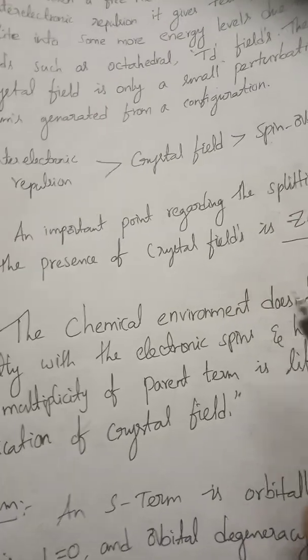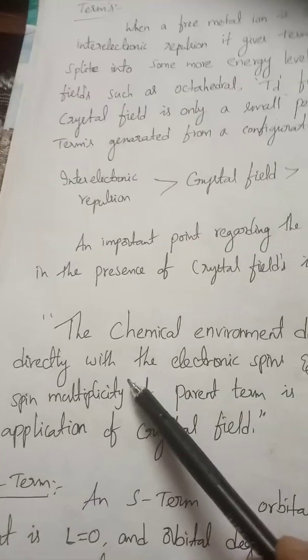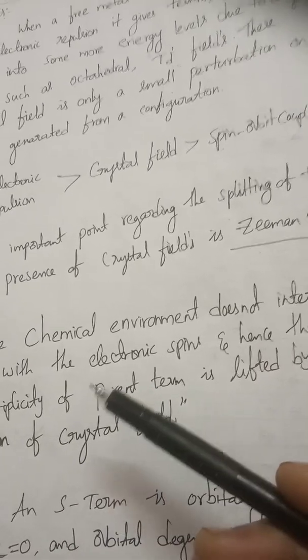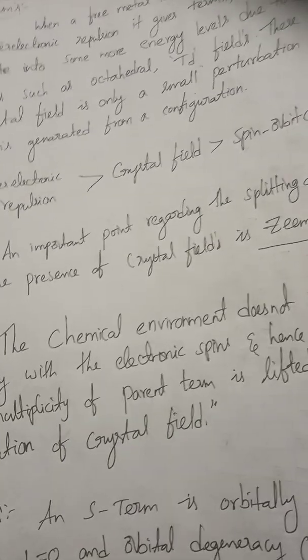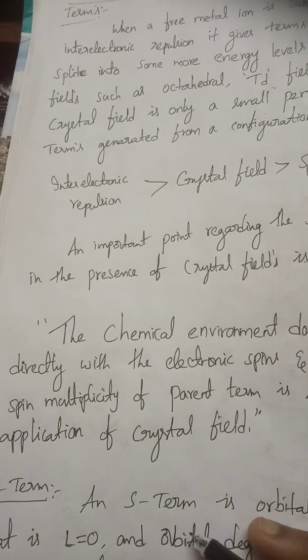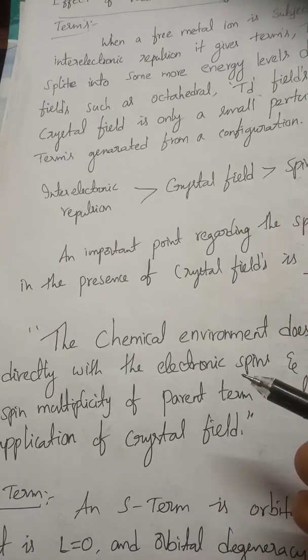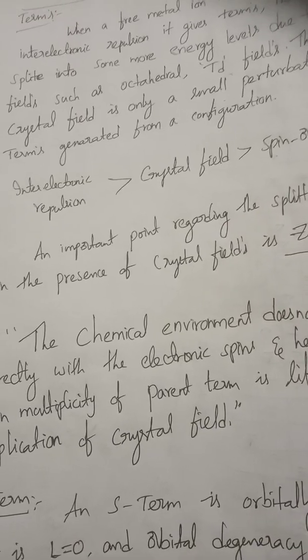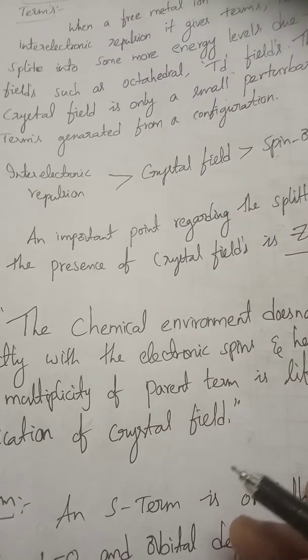These have some energy gaps. The chemical environment does not interact directly with the electron spin, and hence the spin multiplicity of a parent term — for example, triplet F, singlet D, or triplet P — is preserved. Spin multiplicity alone does not specify which is the ground state and which is the excited state. According to Hund's rules, the highest spin multiplicity is the ground state and the lowest is the excited state. For triplet F and singlet D, there is some energy gap, so triplet F is the ground state, next singlet D, and next triplet P.